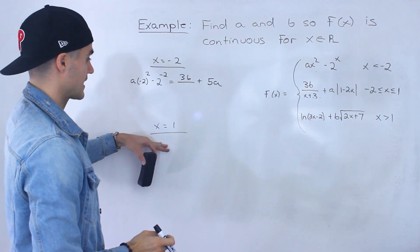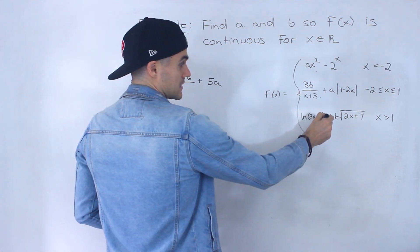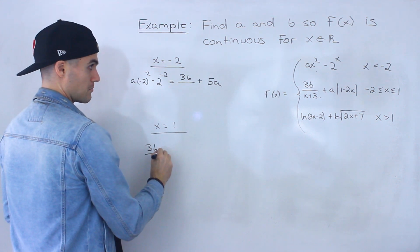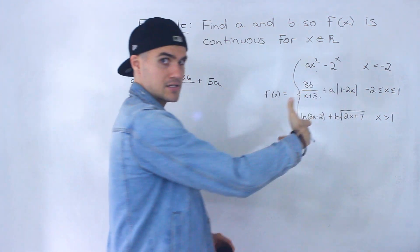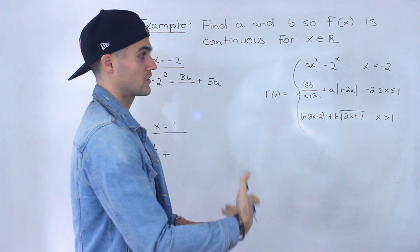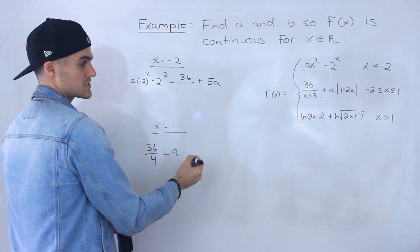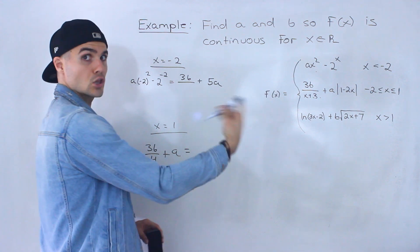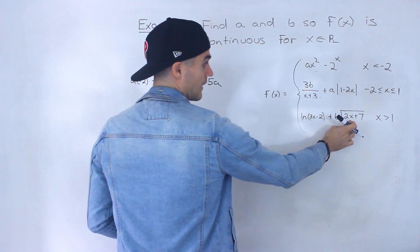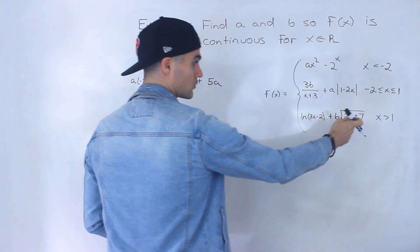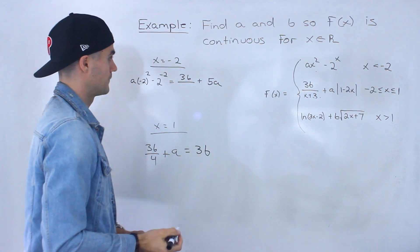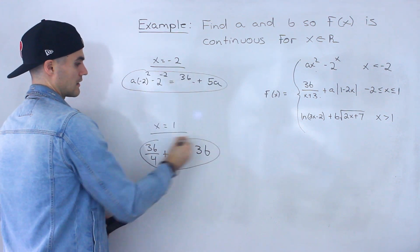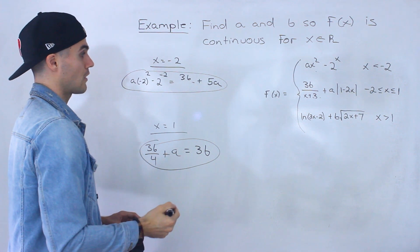For the second meeting point at x equals 1, the middle piece and right piece have to be equal. Plugging 1 into the middle piece: 3b over 4, plus the absolute value of (1 minus 2) which is absolute value of negative 1, equals positive 1, so plus a. Plugging 1 into the right piece: 3 times (1 minus 2) is 1, ln of 1 is 0, and the square root of (2 times 1 plus 7) is the square root of 9 which equals 3. So the right side gives 3b. These two equations are what we'll use to solve for a and b.